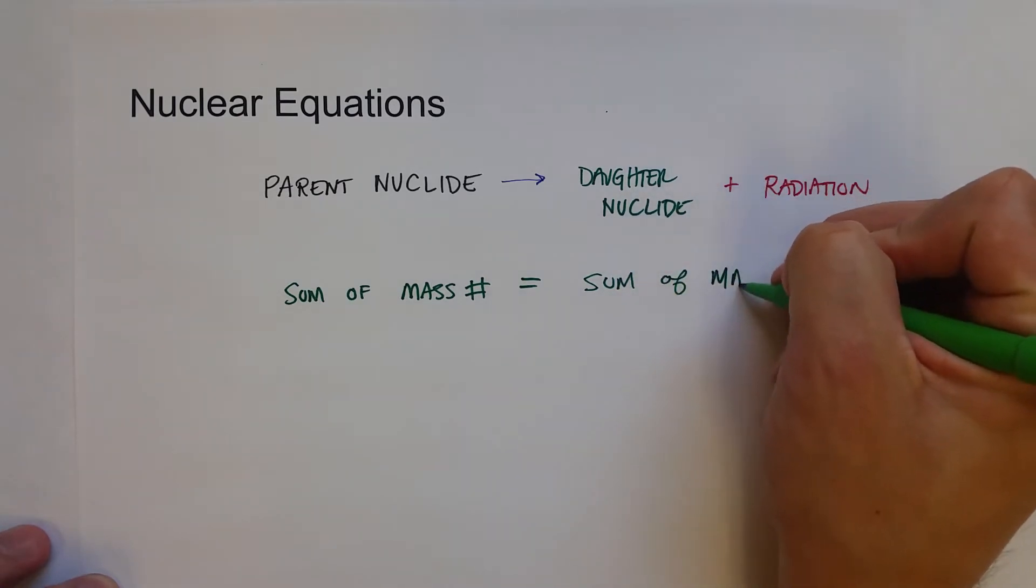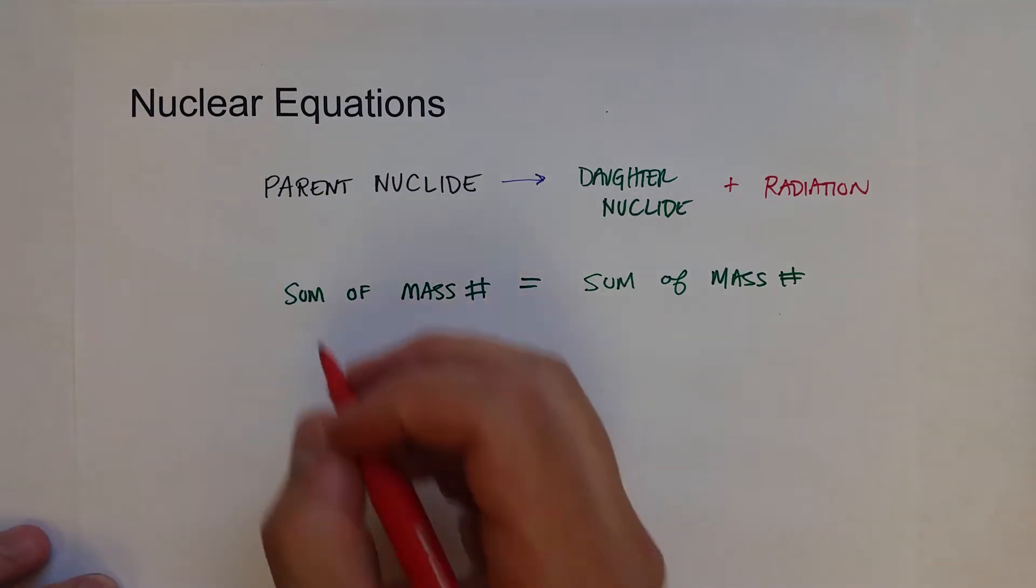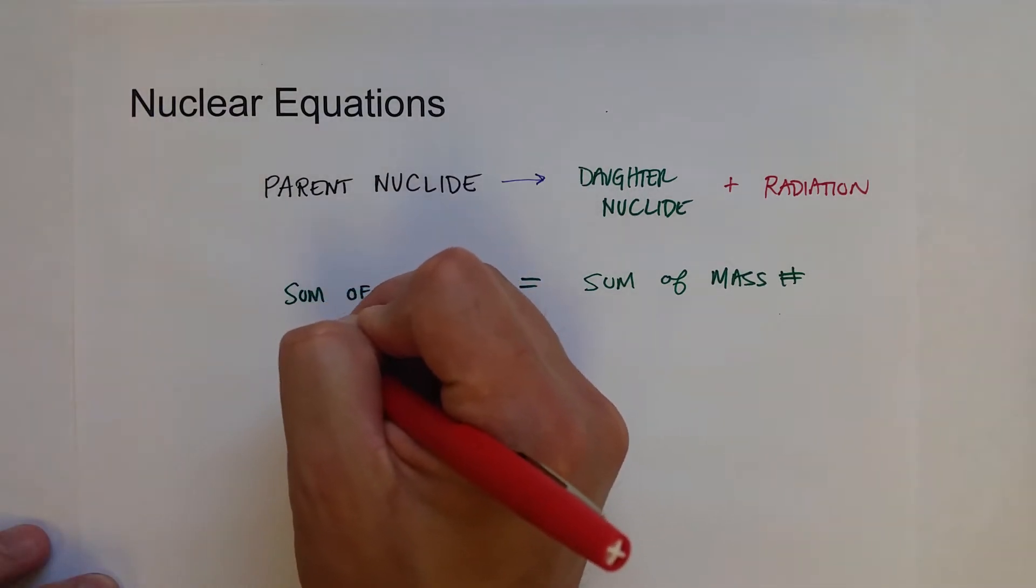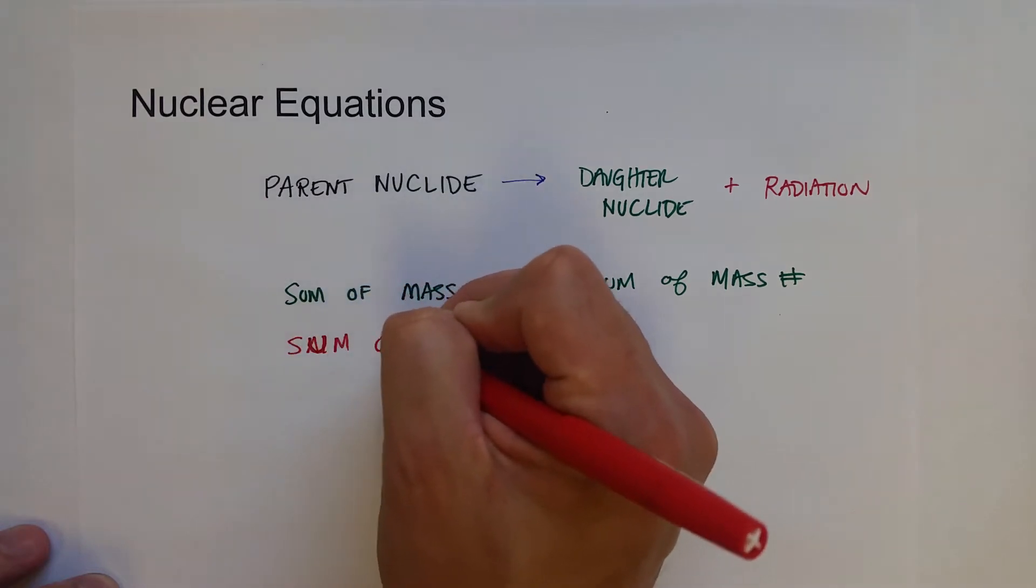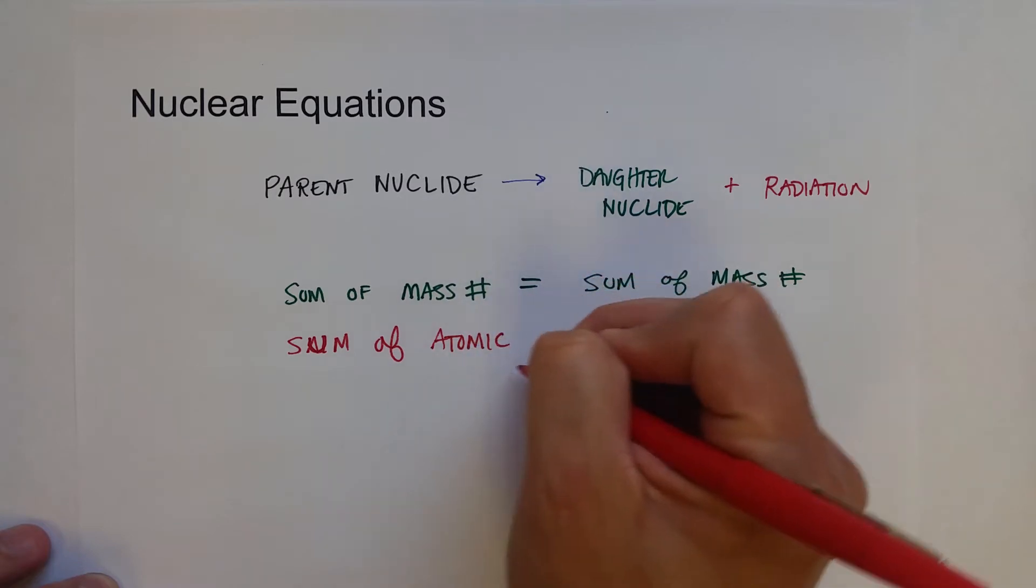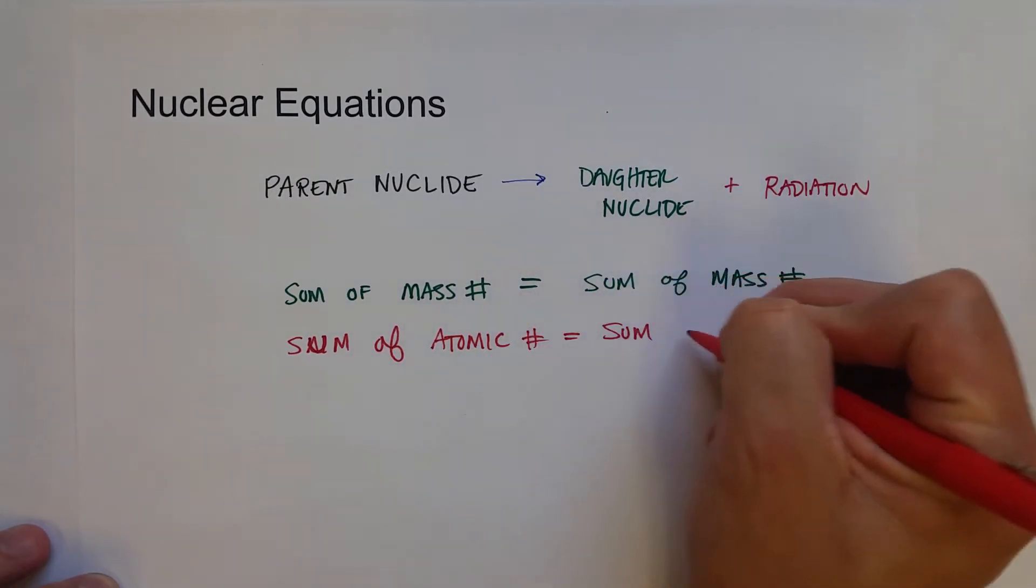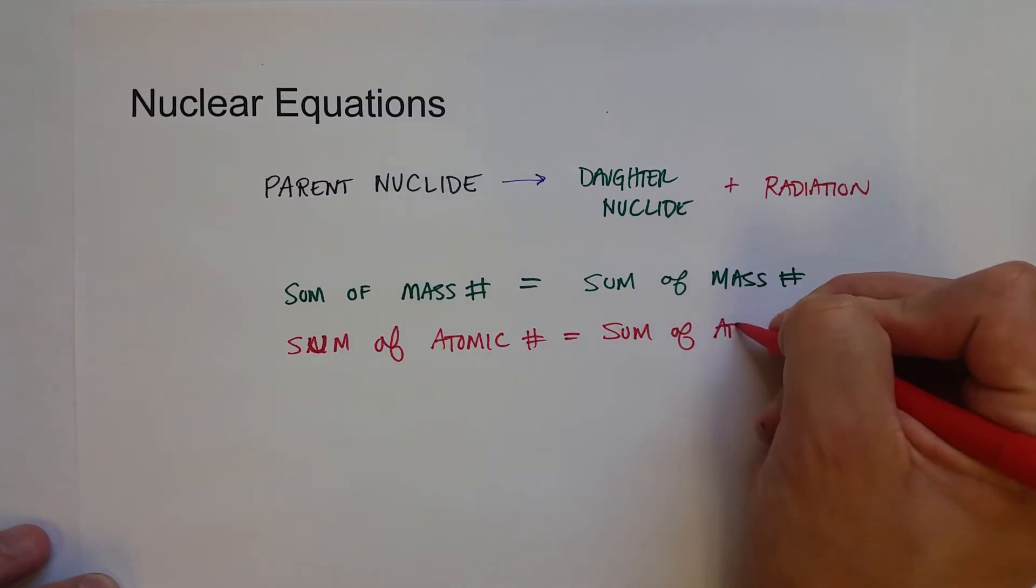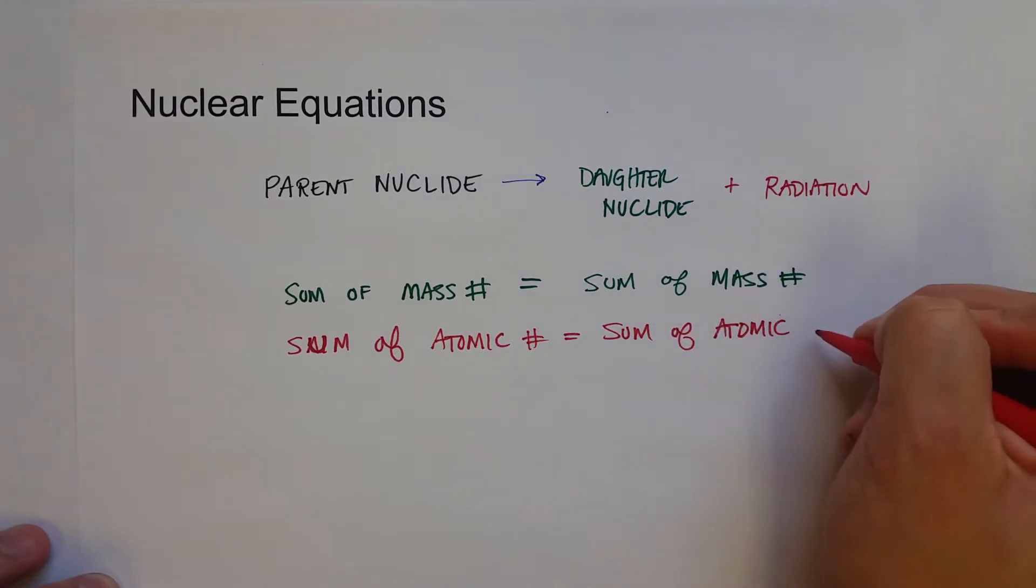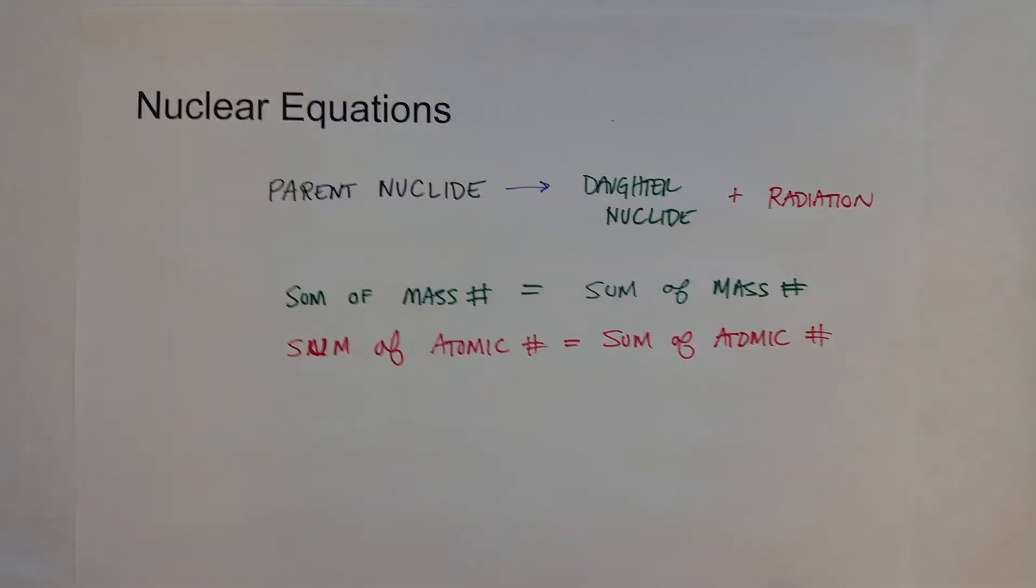The sum of the mass numbers need to equal. And then the second thing that needs to happen is that the sum of the atomic numbers need to be equal on both sides of this equation. And in doing so, what we will be able to do is we will be able to predict some things about this nuclear reaction.